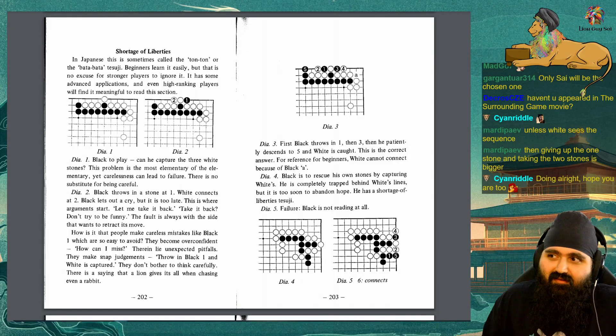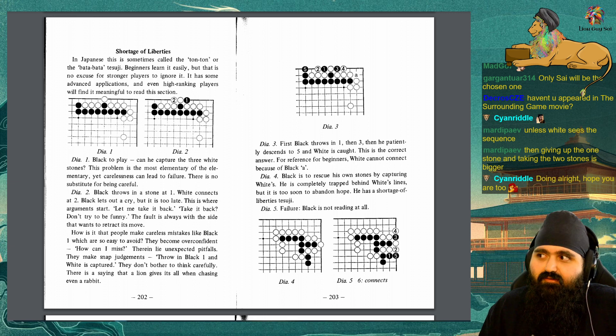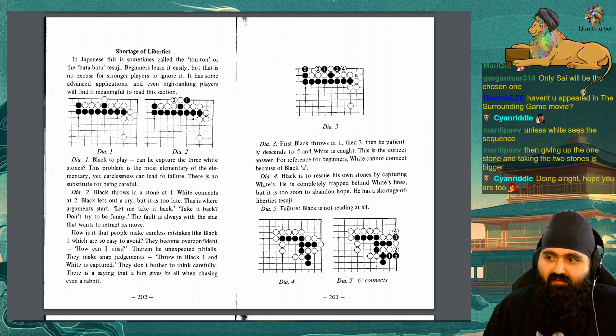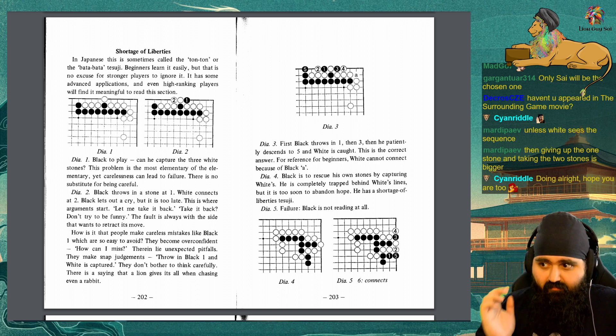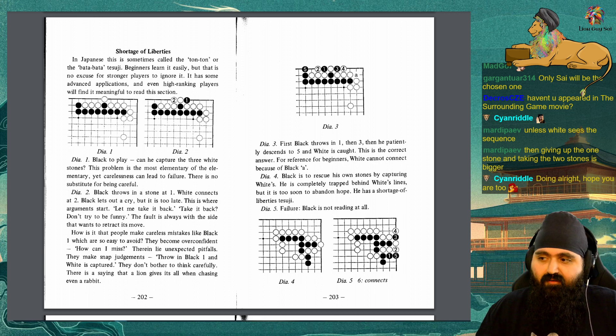Answer to problem 8: The clamp at black 1 is correct. White 2 and 3 form a ko. The mistake everyone makes 2 or 3 times is to play white 2 at 3, followed by black A, white 2, black B and a snapback. Shortage of liberties: In Japanese, this is sometimes called the ton ton or the bata bata tesuji. Beginners learn it easily, but that is no excuse for stronger players to ignore it. Its advanced applications, even high ranking players will find it meaningful to read this section.